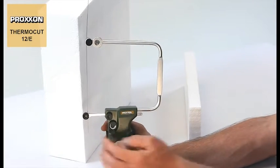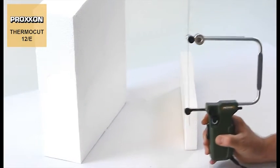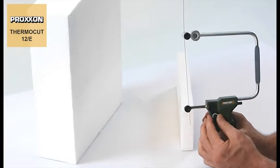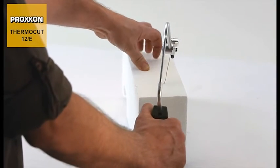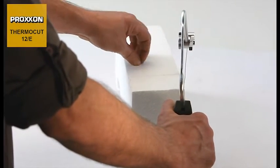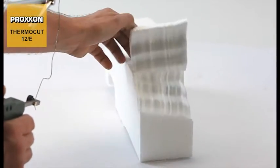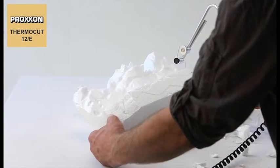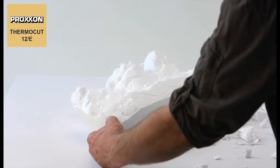As a rule of thumb, the thinner the material, the lower the required temperature. With such versatile features, the ThermoCut 12E is ideally suited to a wide range of applications, serving not just builders of model railways, but also architects, designers and decorators.